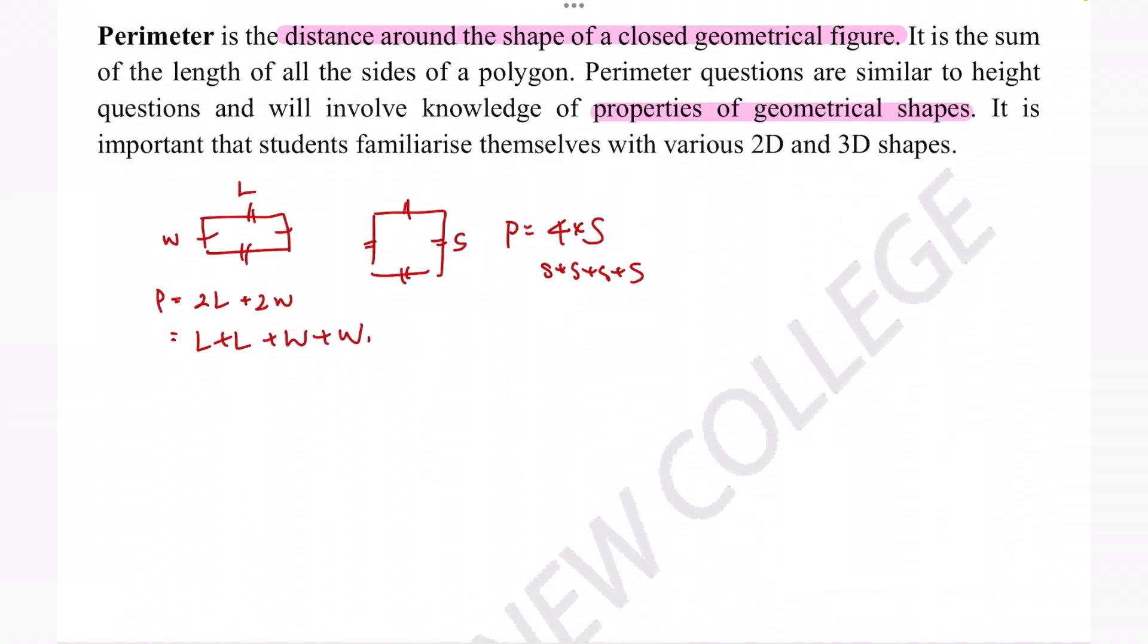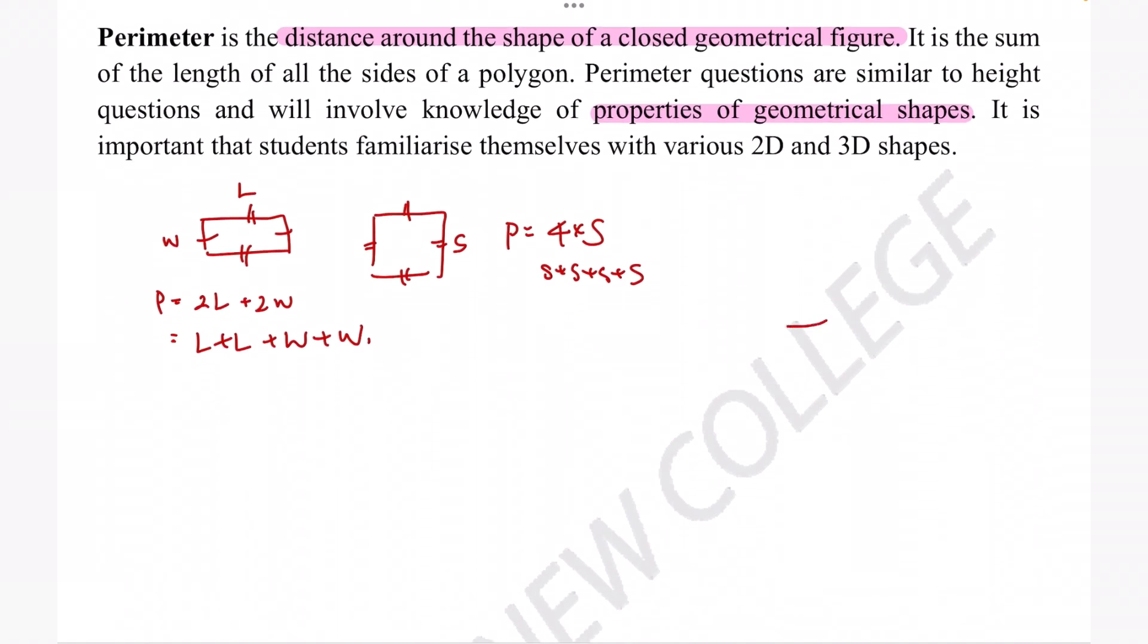More difficult questions can involve things like circles. Circles have their own name for the perimeter, and it's called the circumference. If you want more in-depth knowledge about circumference, there is a separate video that you may want to check out as well.